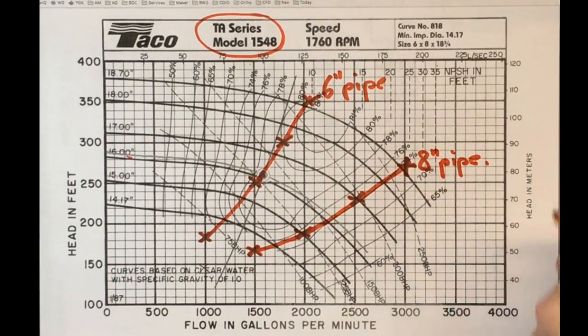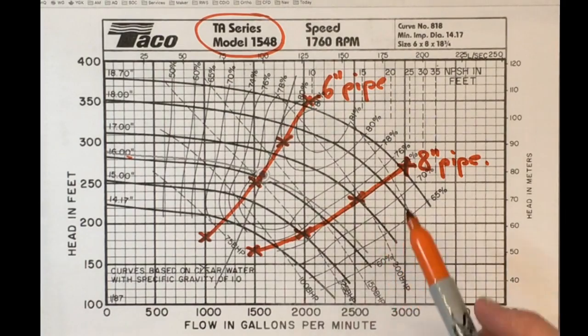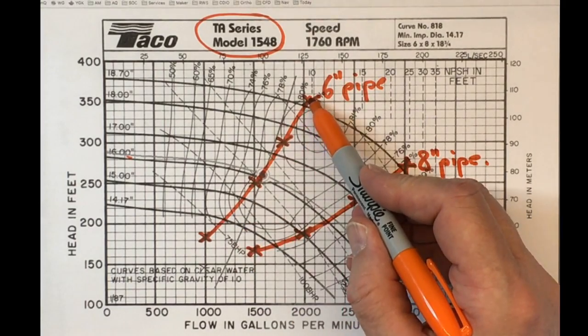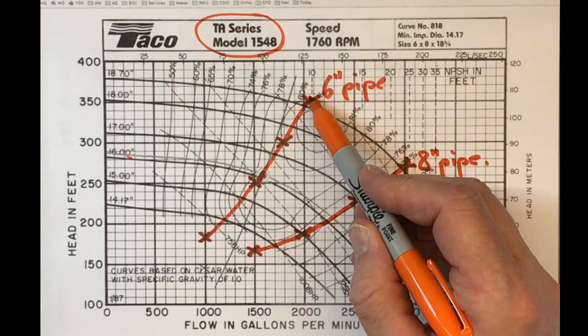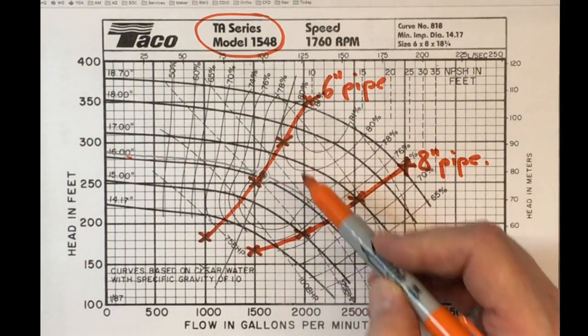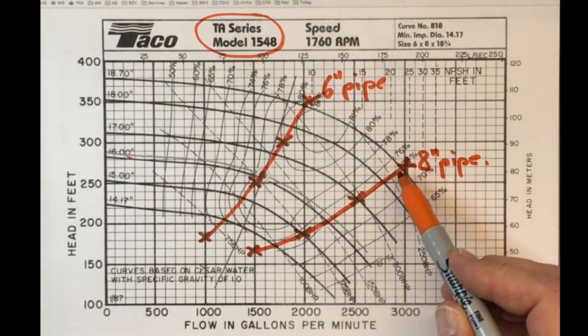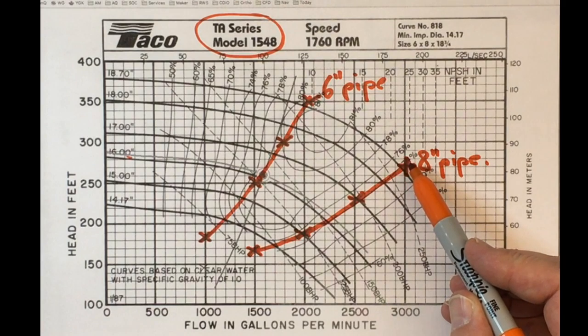So now we're trying to pick between two different design conditions. One is this 6-inch pipe where just about half of the energy we were putting in was going into friction losses in the pipe, and the other is this 8-inch pipe where it's a much smaller fraction of the energy that's being thrown away.